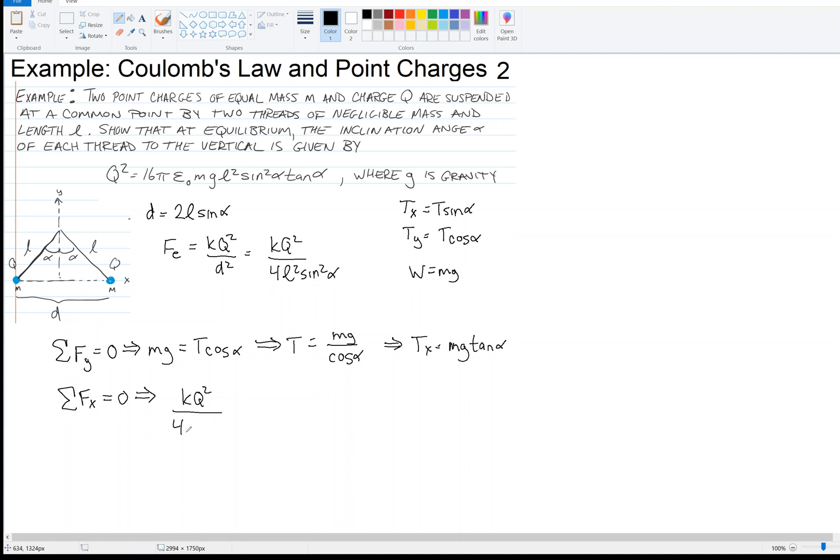So I have that KQ² over 4L² sine² alpha must equal the tension in the X direction, which is MG tangent of alpha.